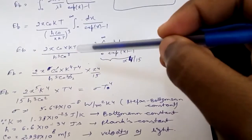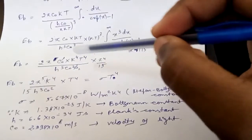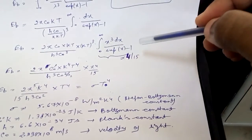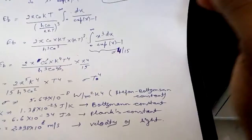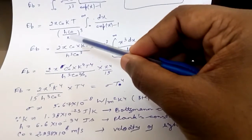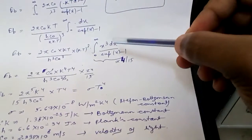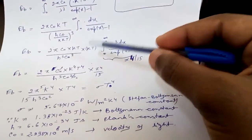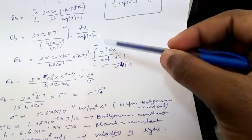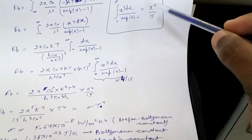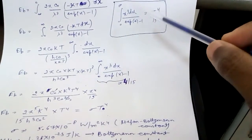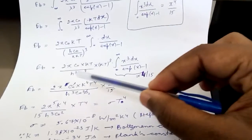The constant terms are 2πc₀, kT, and (kT)³/(h³c₀³), and within the integral we have x³/(eˣ − 1). The rest is treated as constant and taken out of the integral. So we have the standard integral ∫₀^∞ x³/(eˣ − 1) dx, which equals π⁴/15 — a result you can find in any graduate-level math textbook.